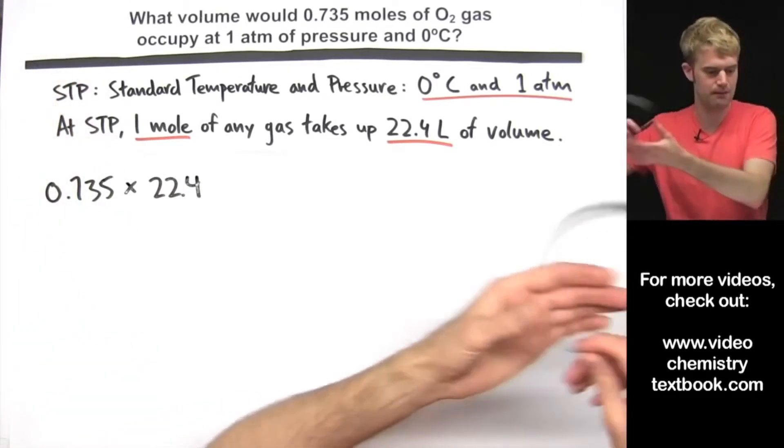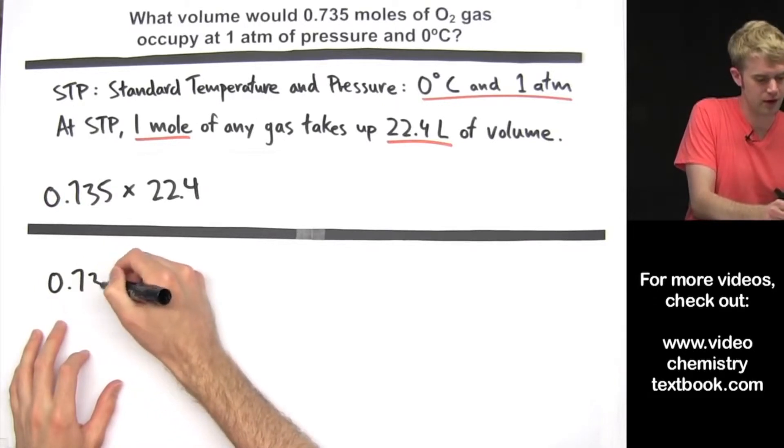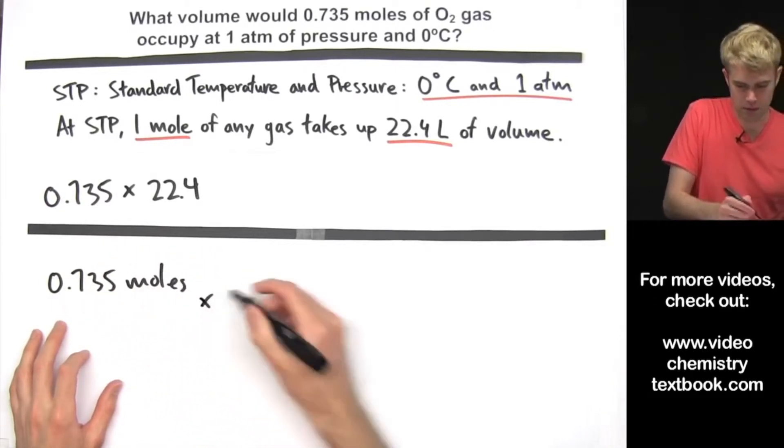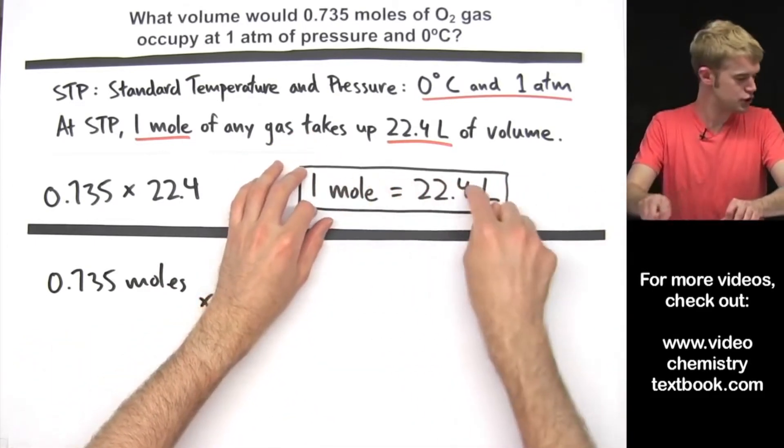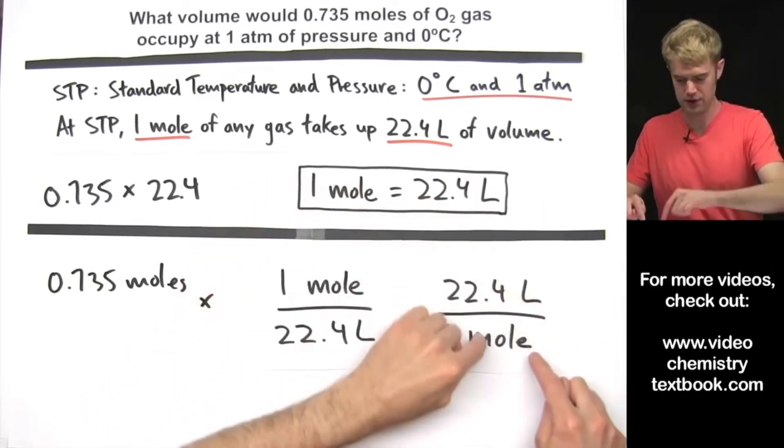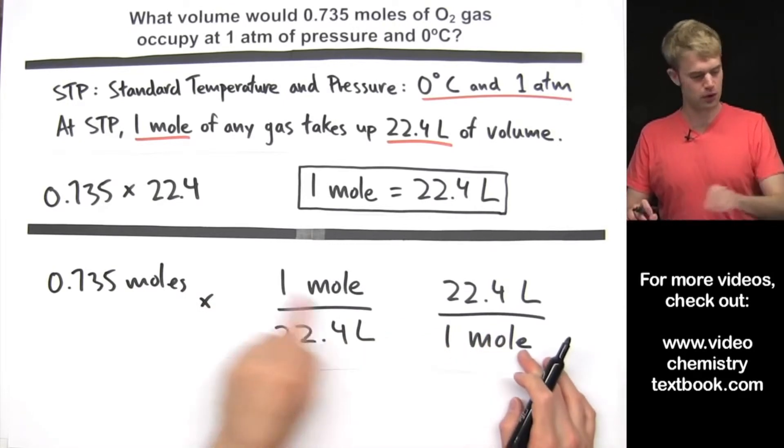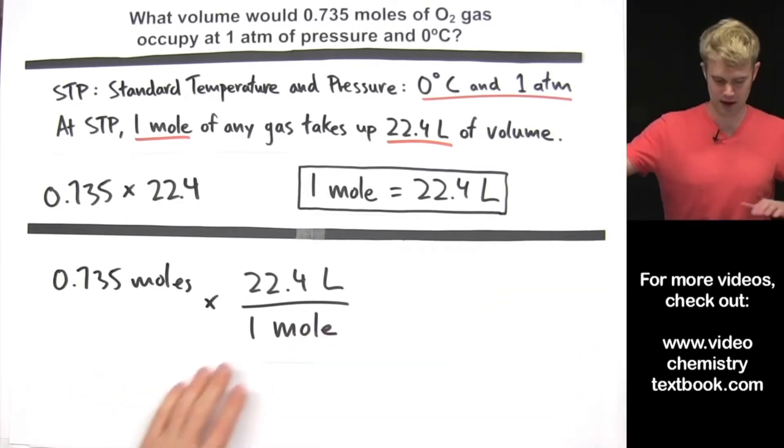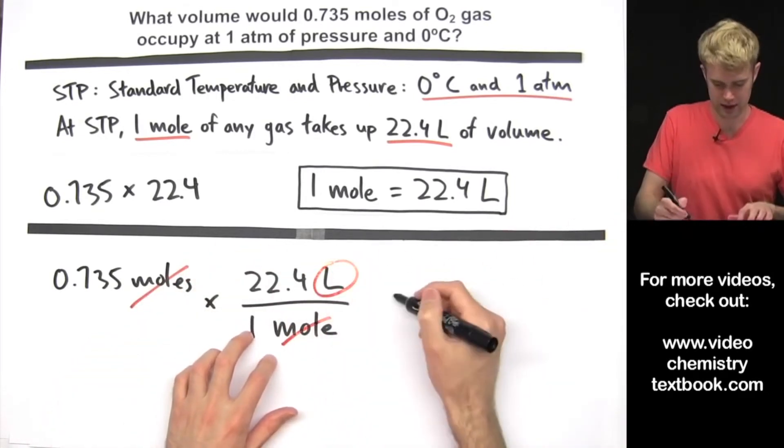This is kind of how we'd think through it, and now to use a conversion factor, we're going to start with 0.735 moles and we're going to multiply it by a conversion factor made from this relationship. Here are our two choices with this on top, with this on the bottom and flipped. We want to choose the one that's going to get rid of moles so it puts it on the bottom. I'll put it right here, moles cancels out, moles cancels out, leaves this with liters.